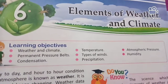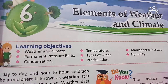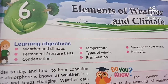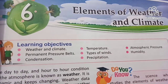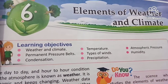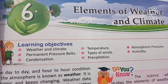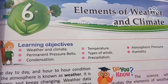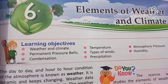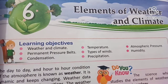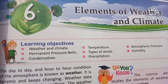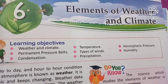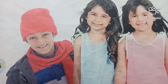Good morning, seventh class. Today we will start our next chapter — Chapter 6: Elements of Weather and Climate. This is a part of geography, and here are the learning objectives we will cover in this chapter: weather and climate, temperature, atmospheric pressure, permanent pressure belts, types of winds, humidity, condensation, and precipitation.